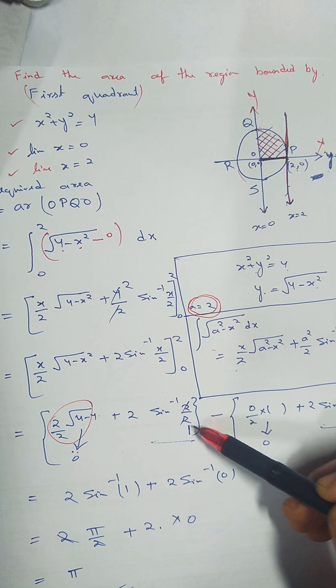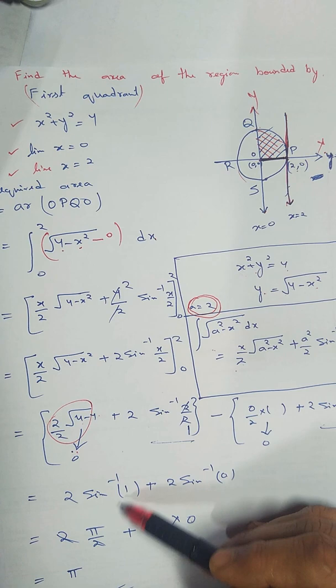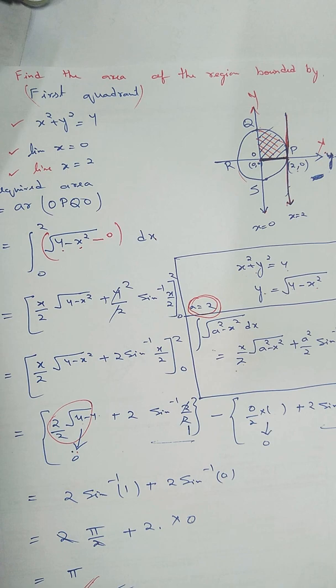And this is sin⁻¹(1) and this is also 0. Here (0/2)sin⁻¹(0), so sin⁻¹(0) = 0 and sin⁻¹(1) = π/2. Then we will get the answer π.